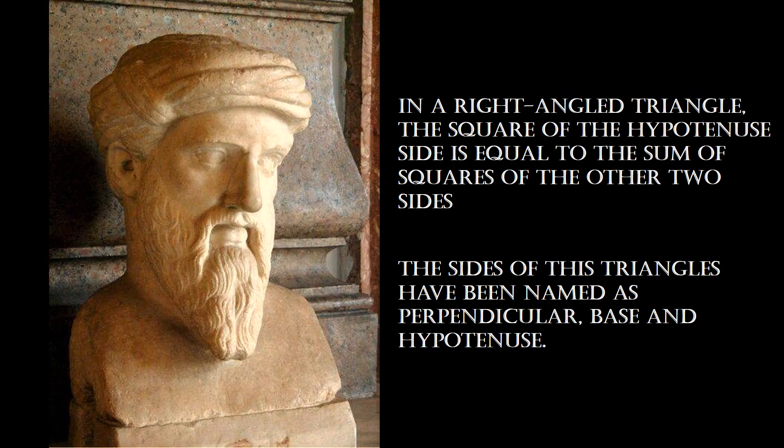The Pythagorean theorem is named after Pythagoras of Samos, an ancient Greek mathematician and philosopher. His statement of the theorem states that in a right-angle triangle, the square of the hypotenuse side is equal to the sum of the squares of the other two sides. The sides of these triangles are named as perpendicular, base, and hypotenuse.